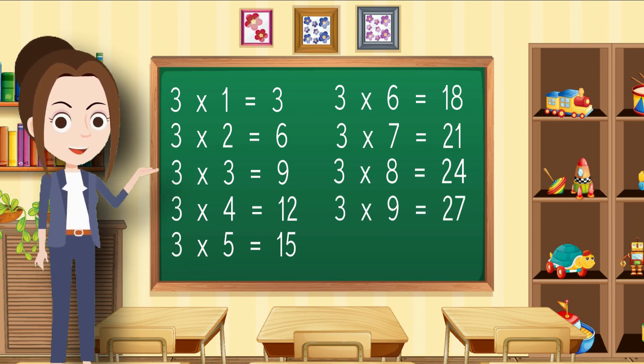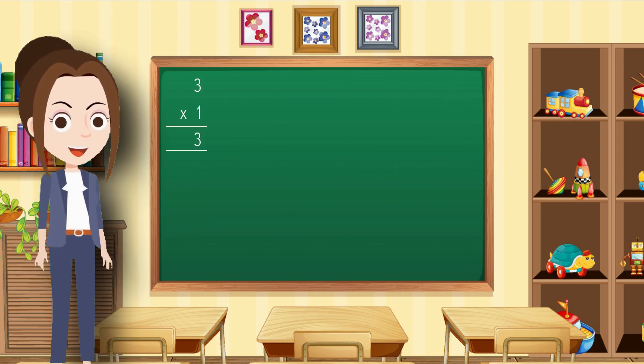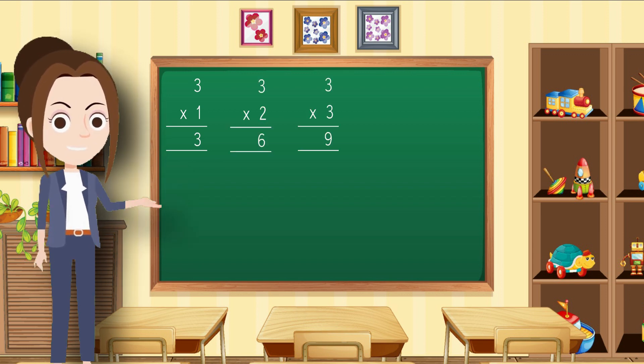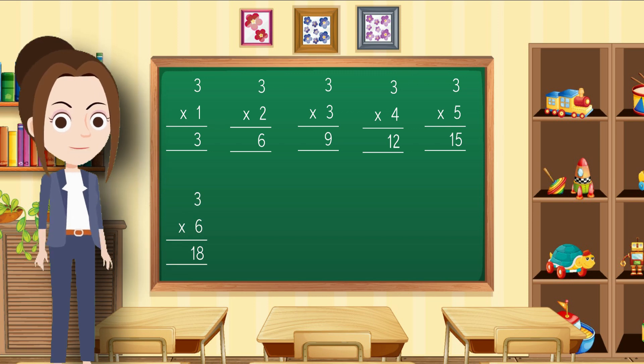Three tens are thirty. The multiples of 3: 3 x 1 = 3, 3 x 2 = 6, 3 x 3 = 9, 3 x 4 = 12, 3 x 5 = 15, 3 x 6 = 18, 3 x 7 = 21.